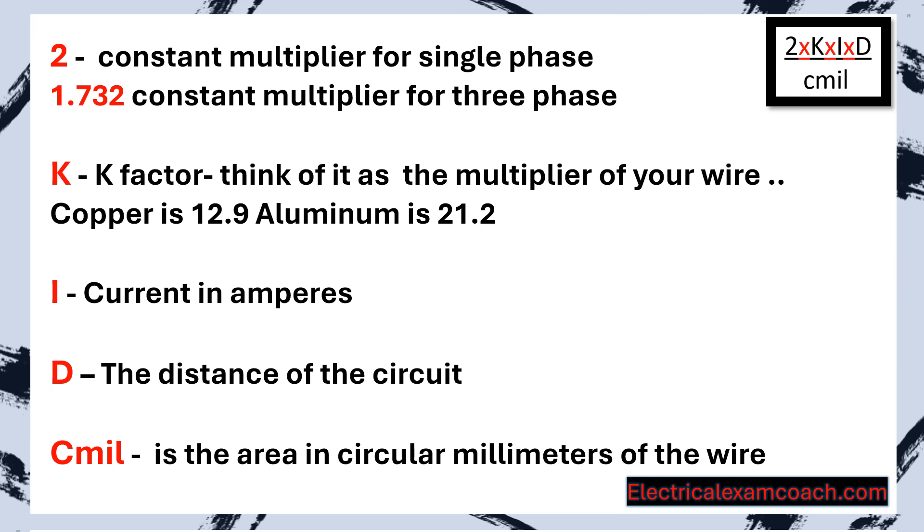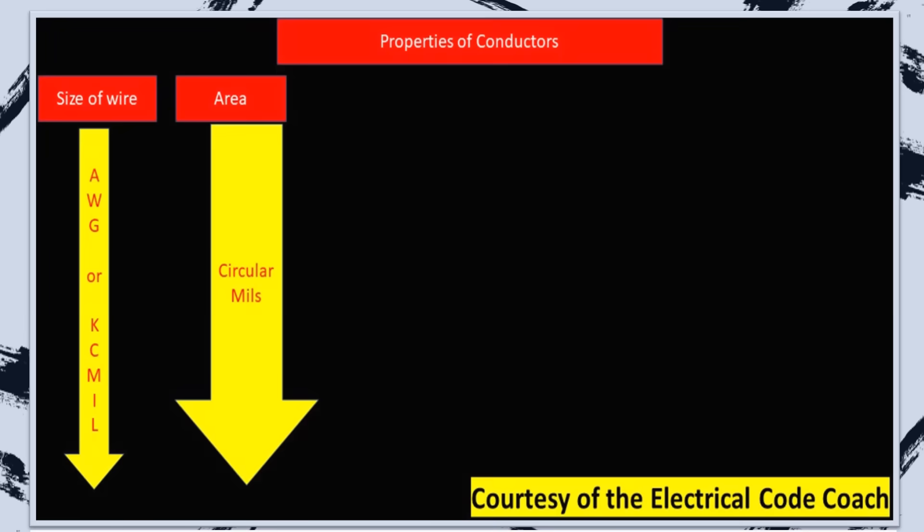To find the cmils of a wire, we need to head to chapter nine, table eight. It's toward the back of the book in the chapter nine tables. Go ahead and head there now. When we get there, we find that there's a lot going on with the table. But just like every other table, we only need to focus on what we need to focus on.